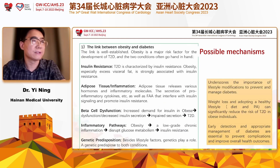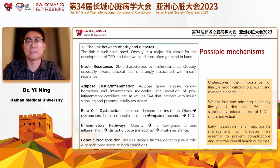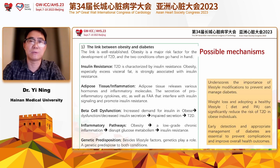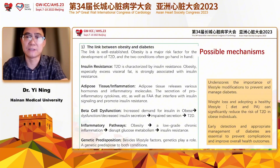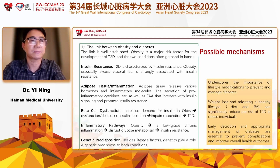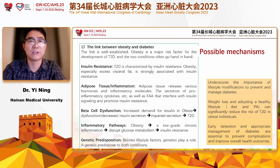First, I'd like to discuss the link between obesity and diabetes. The association between obesity and diabetes has been established for several decades. Obesity is a significant risk factor for development of type 2 diabetes, and the two conditions often go hand in hand. Behind all the linkage of the association, we have to discuss about the biological mechanism — why obesity is connected with diabetes, including insulin resistance.